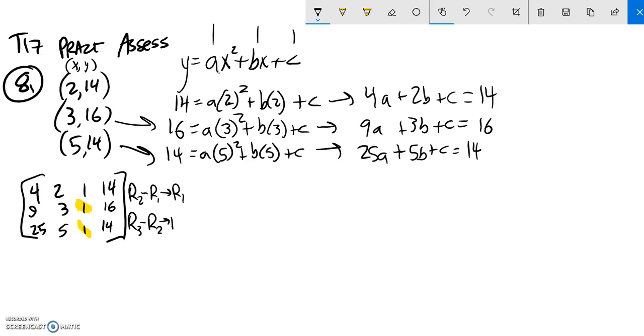And then now I can just focus on my arithmetic. First row is not going to change. So 4, 2, 1, 14. And now 9 minus 4, that's a 5. 3 minus 2 is 1. 1 minus 1 is 0, which I wanted to happen. 16 minus 4 is 2.